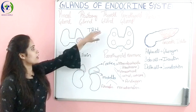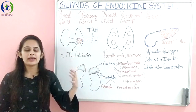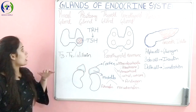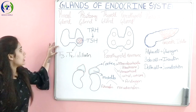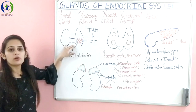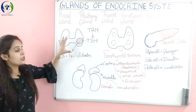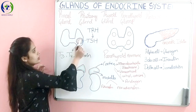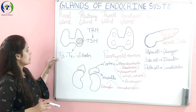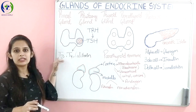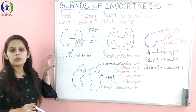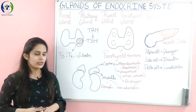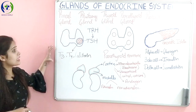The next major gland is the thyroid gland. It is situated at the base of the neck, below the Adam's apple. It is somewhat butterfly-shaped and the two lobes are joined below by the isthmus. The functional unit of the thyroid gland is the thyroid follicle. This thyroid follicle is made of follicular cells which secrete thyroid hormones T3 and T4, which help in the metabolism of the body. The other hormone is calcitonin, which regulates calcium levels.